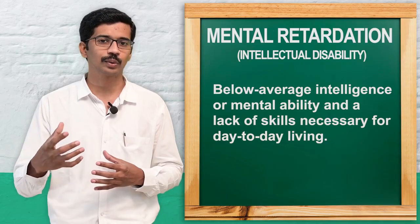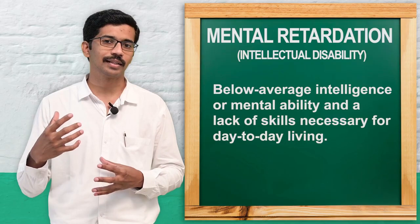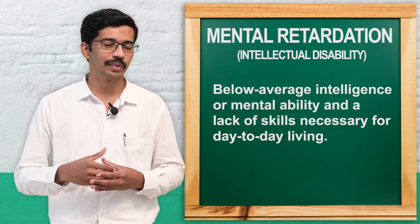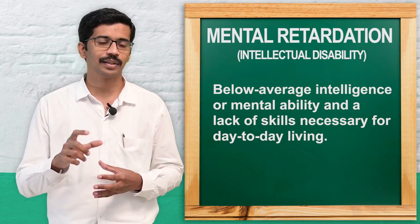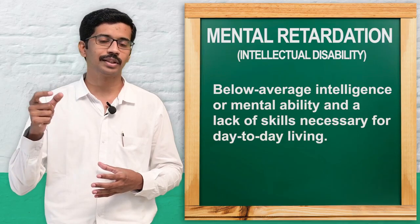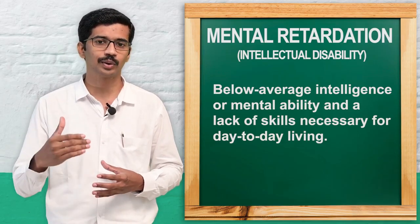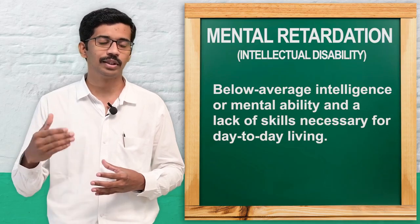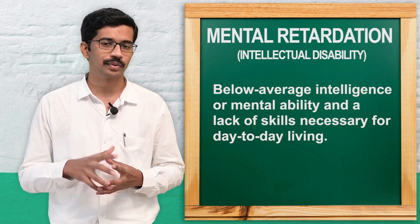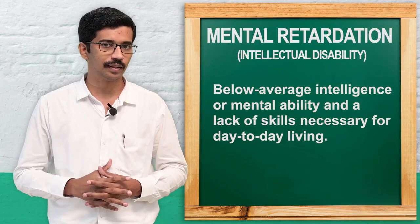What is the intelligence quotient? There are many intelligence tests available. We go for an intelligence test and the score we obtain is called the mental age. The IQ is calculated as mental age divided by chronological age — chronological age being the actual age of the person — multiplied by 100. So IQ = MA / CA × 100.